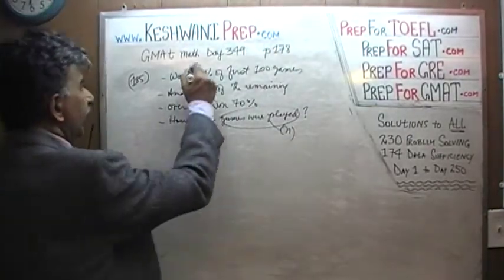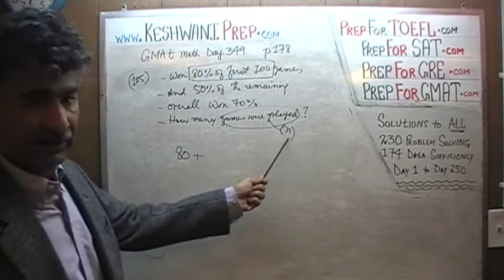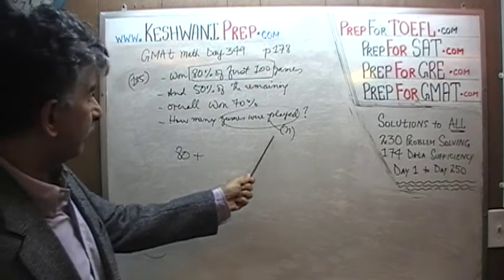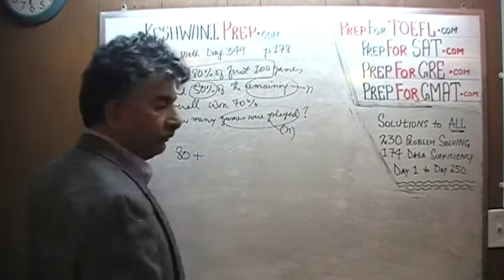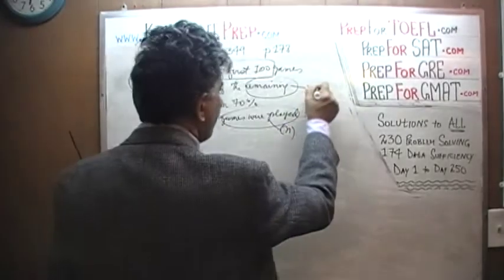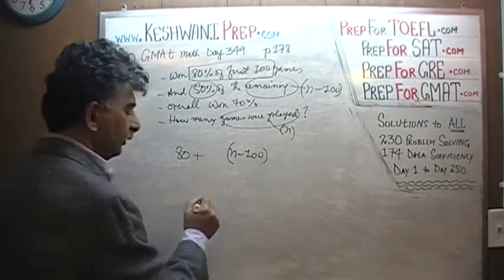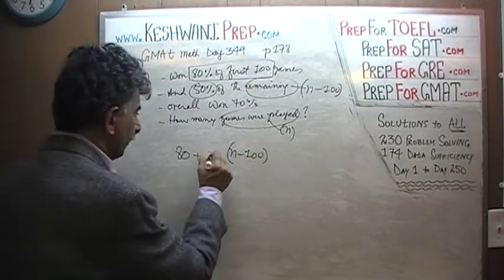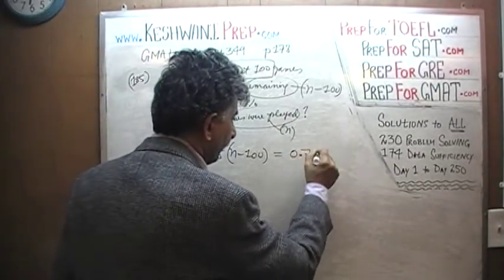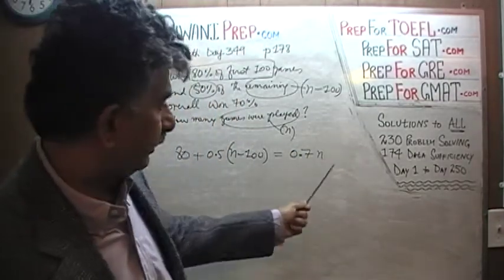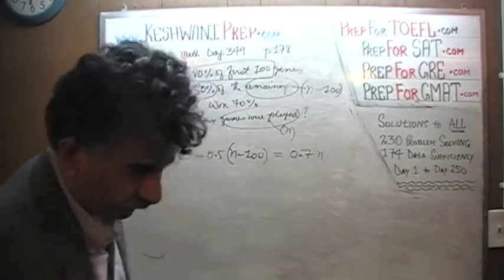Here is our equation: 80% of the first 100 is 80. If n is the total number of games, the remaining games would be n minus 100. We won 50% of those remaining games. And our overall winning was 70% of the total number of games, which is n. That gives us our equation — a pretty straightforward simple linear equation. We just have to solve for n.